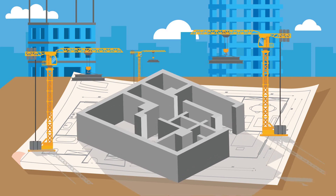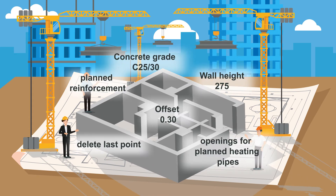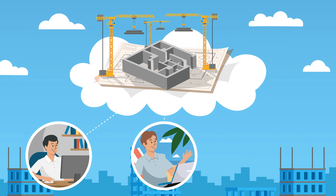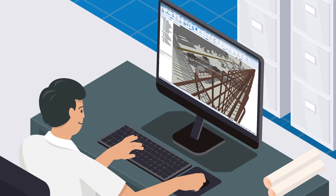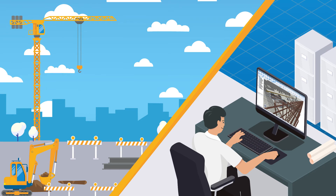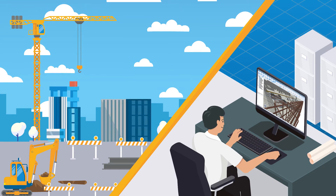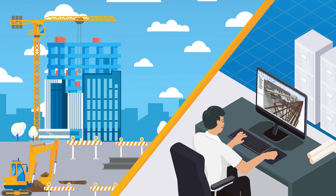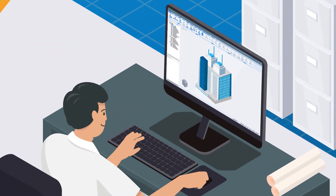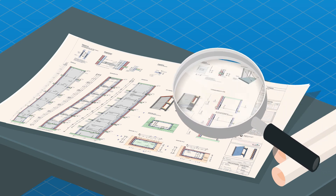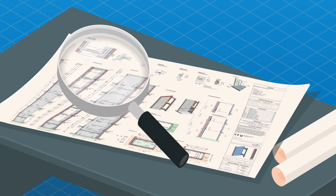Different team members can work on a 3D model simultaneously, whether in the office, home office, or in the branch. Our innovative cube reinforcement sets future trends in model-based reinforcement planning. Subsequent changes can be made more effectively and quicker. Stracon also allows you to choose between 2D and 3D, with a focus on excellent plan presentation.